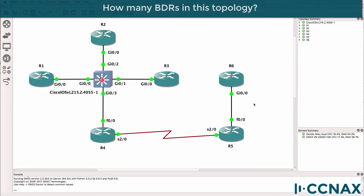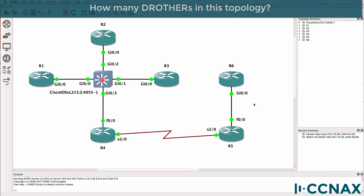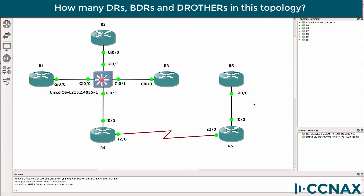Second question, how many Backup Designated Routers, or BDRs, are there in this topology? And thirdly, how many DR others, or DRothers, are there in this topology? So can you answer how many DRs, how many BDRs, how many DR others are there in this topology?